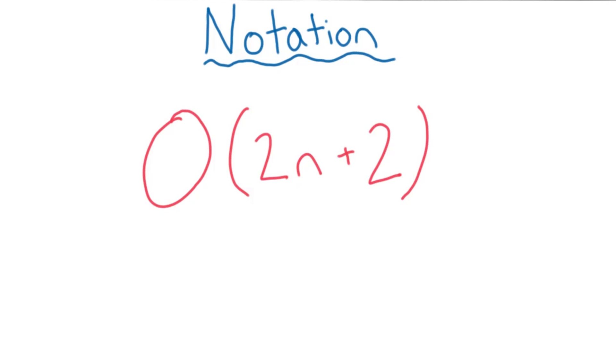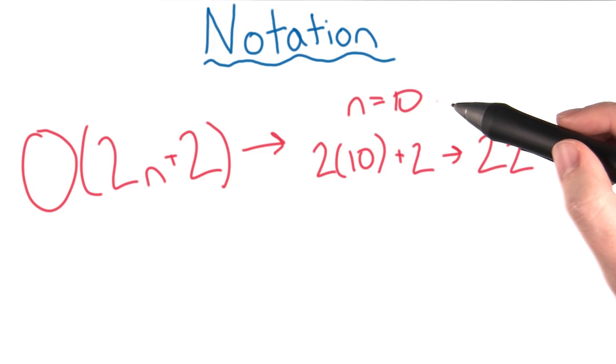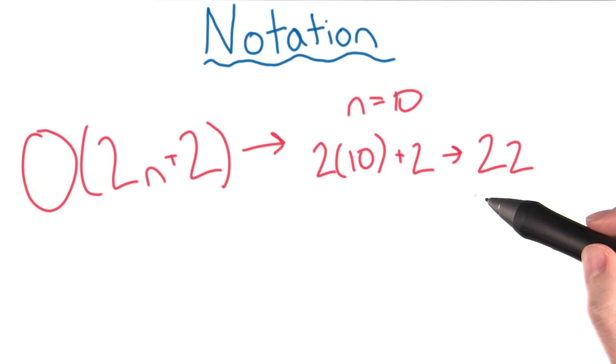Hopefully, the way we count up lines and turn it into something in big O notation is starting to make sense to you. Let's take a look at some examples. If our input string had 10 letters, the calculation would look something like this, and we would end up with the value 22.